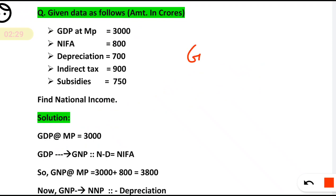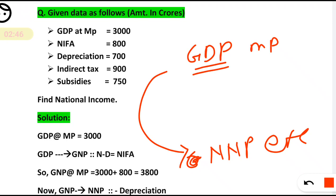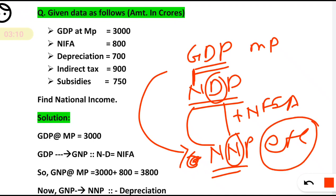We have GDP at market price and we need to calculate NNP at factor cost. To get there, first you go from GDP to NDP by subtracting depreciation. From NDP you move to NNP — domestic to national — by adding net factor income from abroad. That gives NNP at market price. Then to get factor cost, you subtract net indirect taxes.